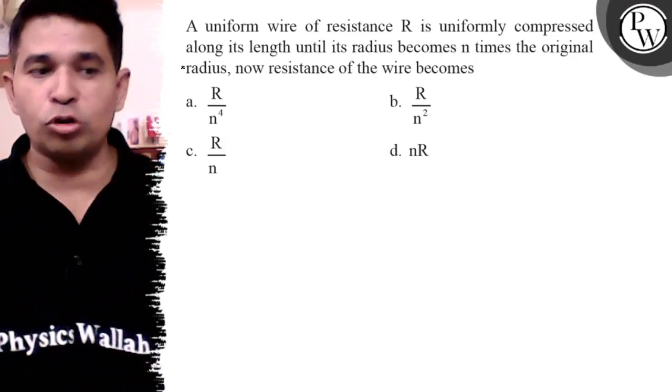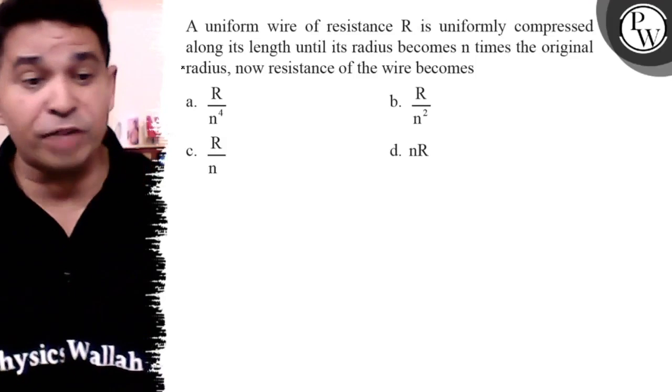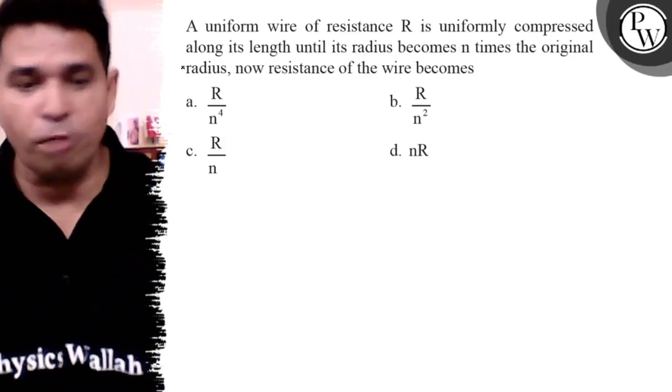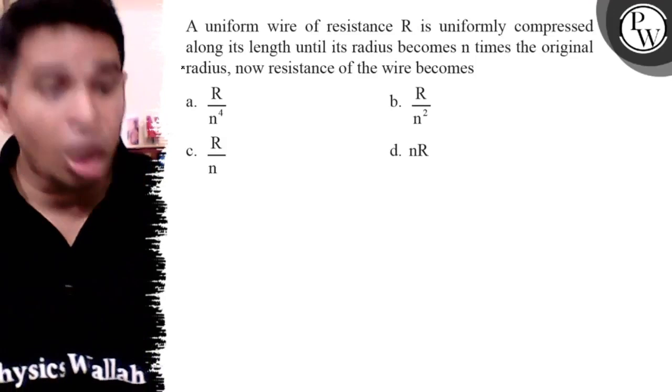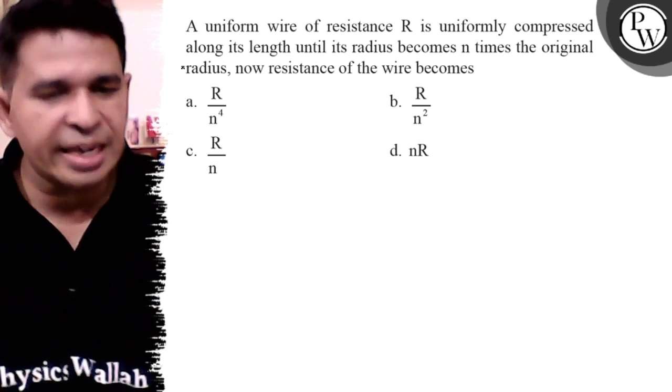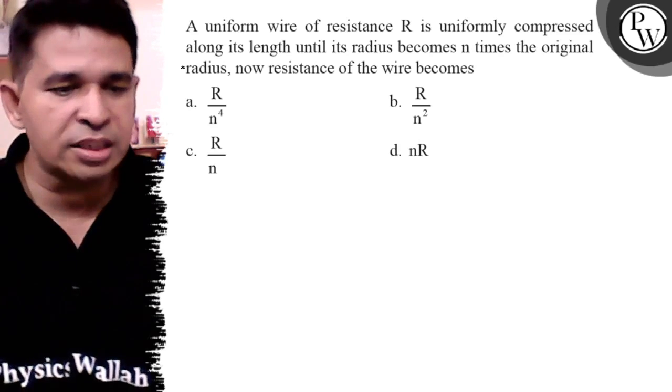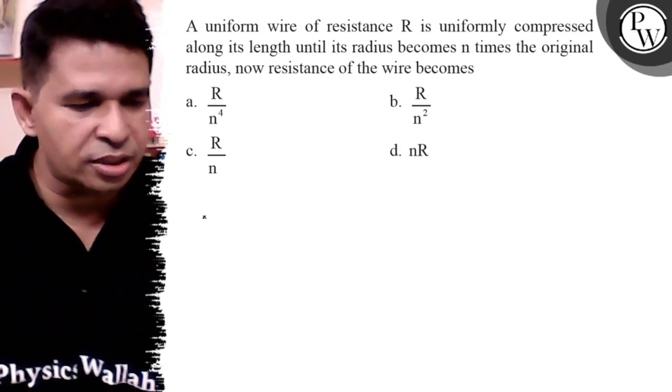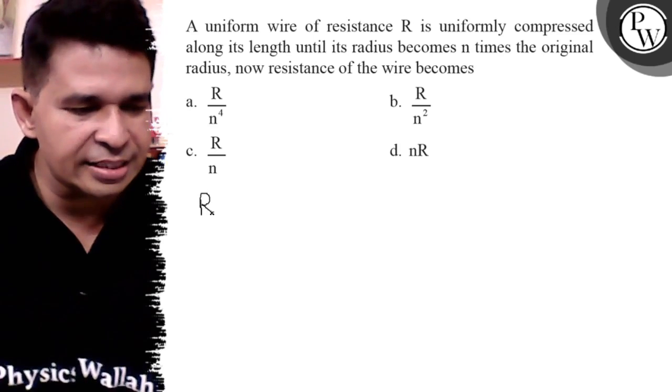Hello everyone, let us see this question. A uniform wire of resistance R is uniformly compressed along its length until the radius becomes n times the original radius. Now resistance of the wire becomes what? We know that the resistance is ρL upon A.